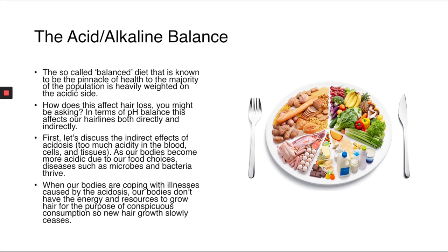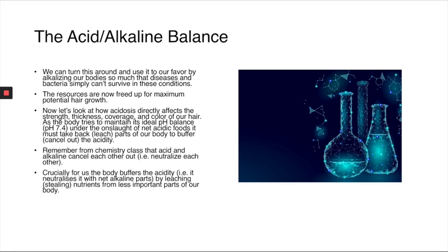The so-called balanced diet popularized by the agricultural industry is heavily weighted on the acidic side. In terms of pH balance, this affects our hairlines both directly and indirectly. For the indirect effects: as our bodies become more acidic, diseases such as microbes and bacteria thrive, and when our bodies are coping with illnesses caused by acidosis, they don't have the energy and resources to grow hair. New hair growth slowly ceases. We can turn this around by alkalizing our body so much that diseases and bacteria simply can't survive, freeing resources for maximum potential hair growth.